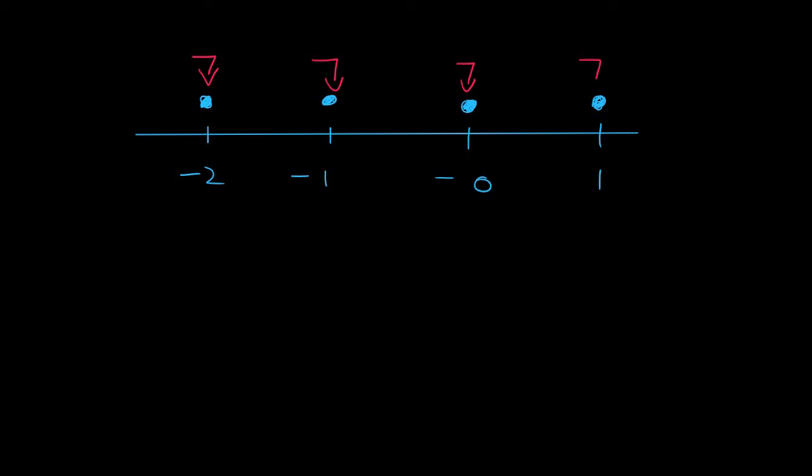So what are these numbers called? We're not going to say x is an element of real numbers because real numbers includes everything. Numbers like this that can be negative and positive but they don't have any decimals, only these complete numbers, we call these the integers. And their symbol is a Z.